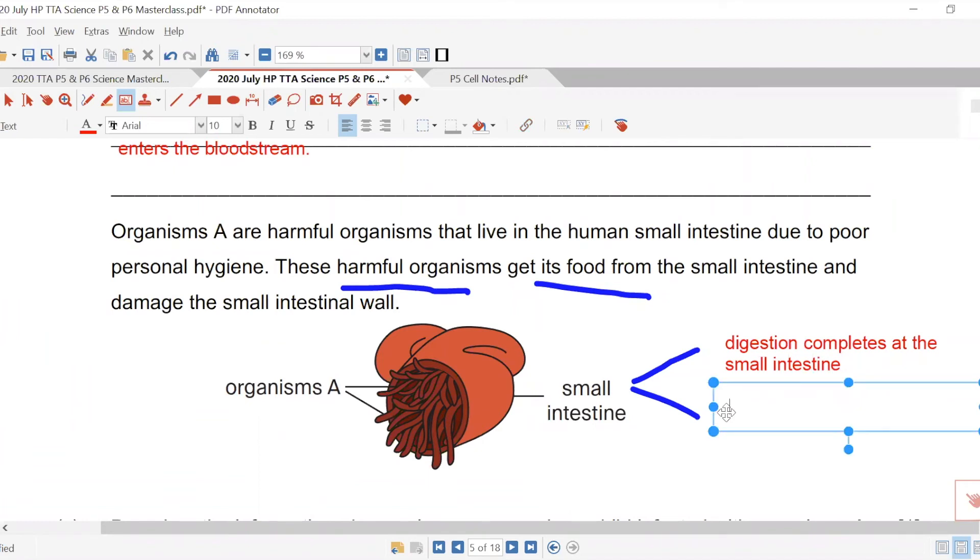Of course, we have our absorption over there, whereby you have digested food passes through the walls of the small intestine. Blood is like how you have your circulatory system, like how you have your cars on the road. It transports everything, everywhere. Transport your food, transport your water to your head, to your legs, to your arms, to everywhere they need.